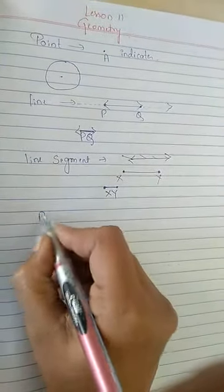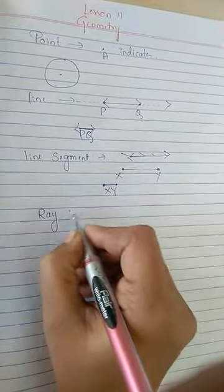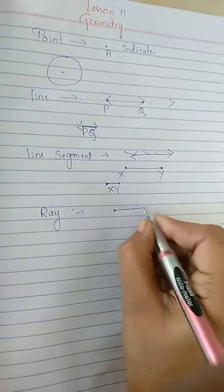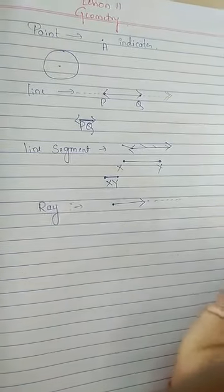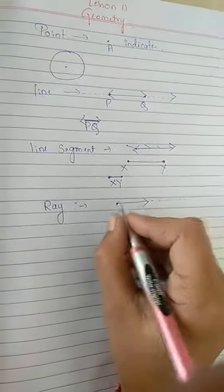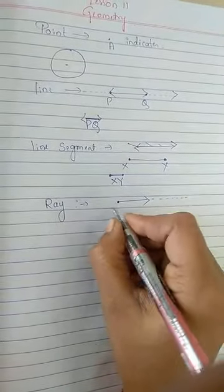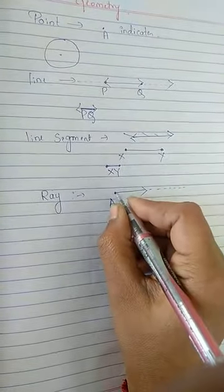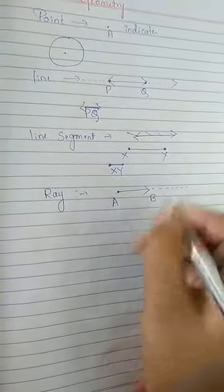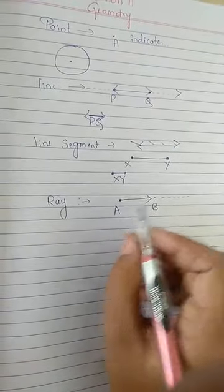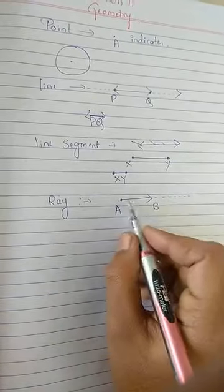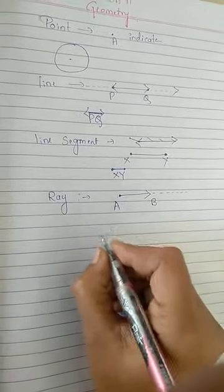Next, if we come to ray, what do you mean by ray? Ray has only one end point. It has one end point. In other direction, it can extend. In one direction, it can extend. And one has end points. If I write this, if I take this point A and this one B, always we have to see, ray is looking like an arrow. In which direction it is moving? In that direction only we have to read.